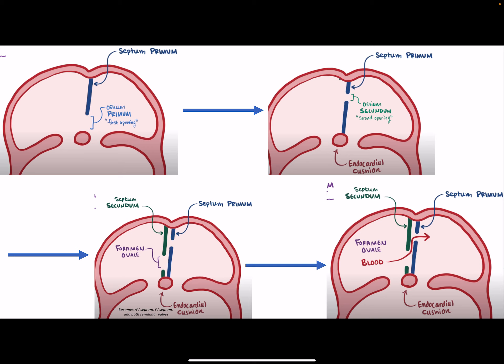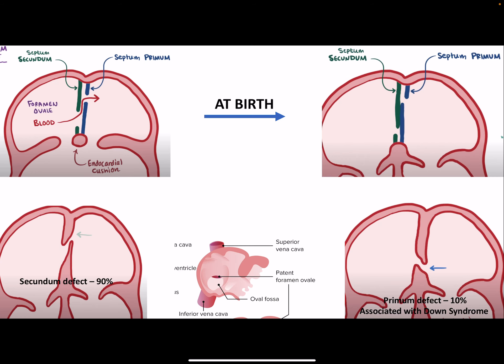During embryological development, we have the ostium as the opening — ostium primum is the first opening and the first septum. Later, we have an ostium secundum, then a second septum forms called the septum secundum, and then the foramen ovale, through which blood rushes. This is normal during fetal development. After birth, the large decrease in intrathoracic pressure and oxygen-induced vasodilation increases pressure in the left atrium, which should close the foramen ovale. If it doesn't close, it's a PFO; if there's missing tissue, it's an ASD. Most ASDs — about 90% — are secundum defects; 10% are primum defects, the latter largely associated with Down syndrome.